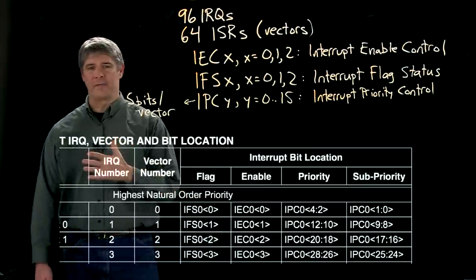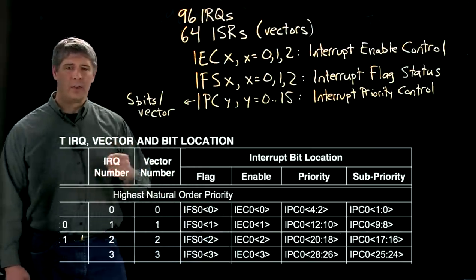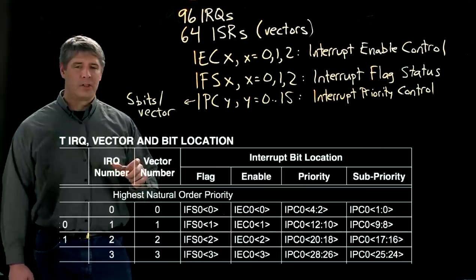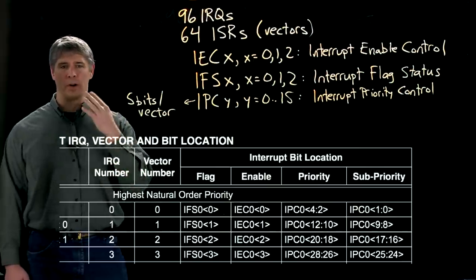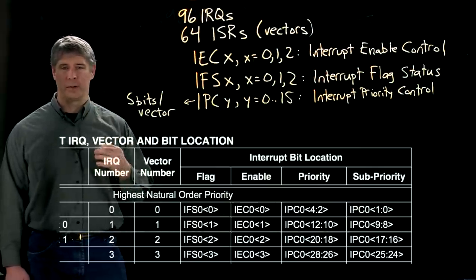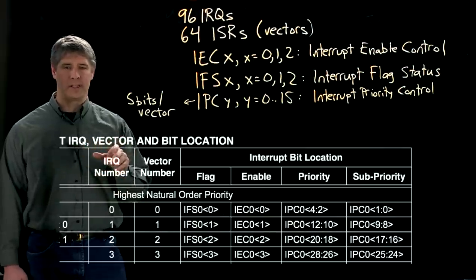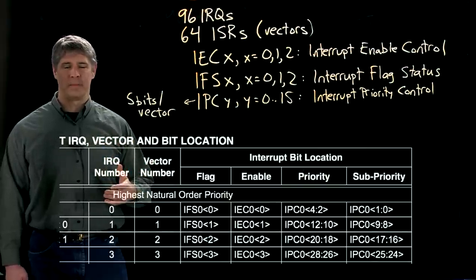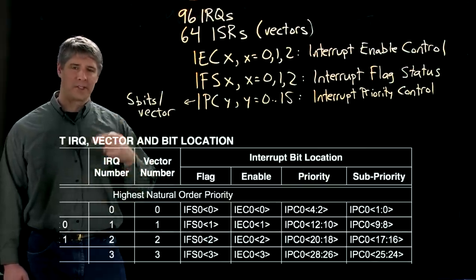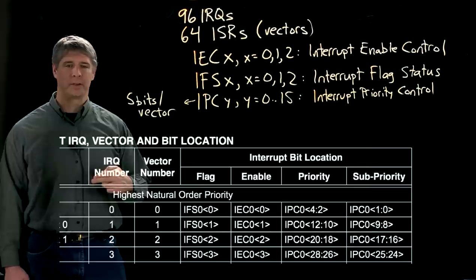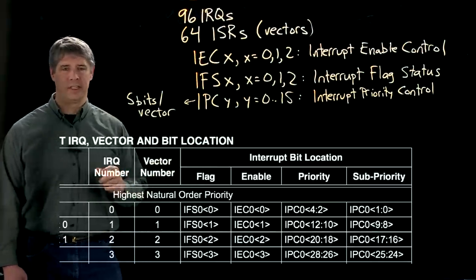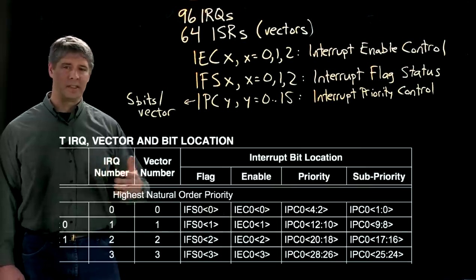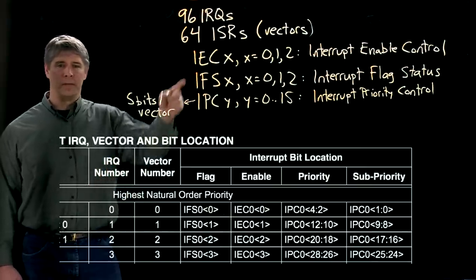So because we need five bits per vector, the way the PIC32 does it is it uses one 32-bit register to hold the priority and sub-priority for four different ISR, four different vectors. It uses five bits for each, so four times five is 20 bits. There's 12 wasted bits in that register. And then you have the next register down in the interrupt priority control. So that's why we need 16 of those registers. 16 times the priority information for four vectors, 16 times four makes 64 vectors overall.